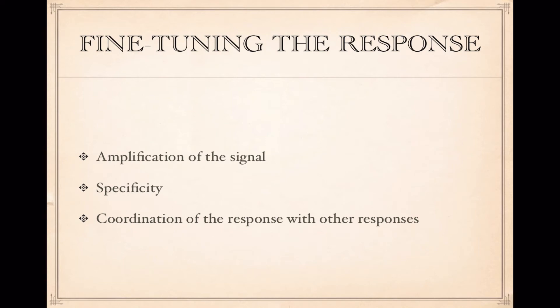What I want you to see in this chain of events is that a specific gene can be activated by a certain signal by way of a transduction pathway that switches on a gene in the nucleus. Now, all these different cellular responses have to be fine-tuned. There are three ways of tuning the response: the signal can be amplified; the signals are very specific, so they have a quality called specificity; and the signals have to be coordinated with other responses.